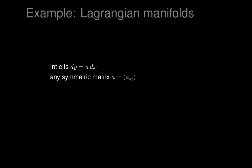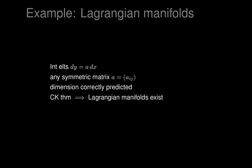So integral elements of this system are given by choosing a point (x, y) — that's 2n dimensions — and then choosing an n×n symmetric matrix A. The integral elements form a manifold of a certain dimension, which one can calculate out, and it is correctly predicted by the predicted-dimension formula. Therefore, according to the Cartan-Kähler theorem, Lagrangian manifolds exist.